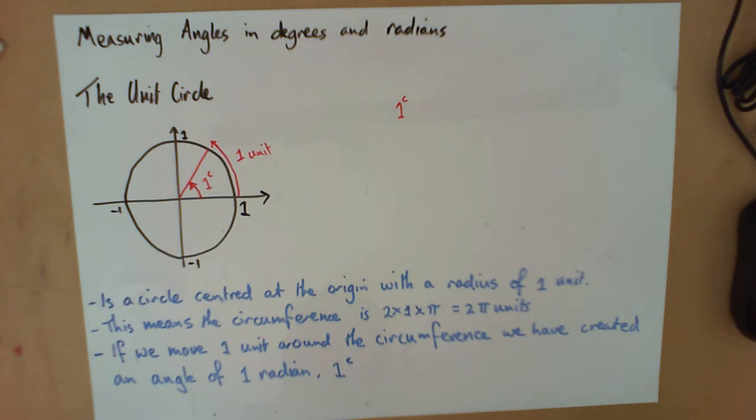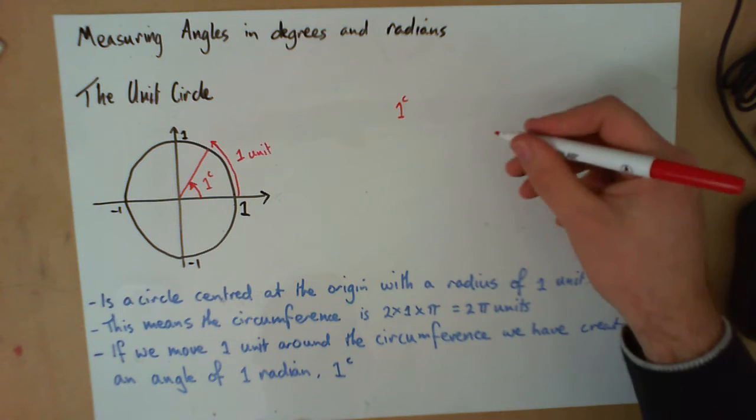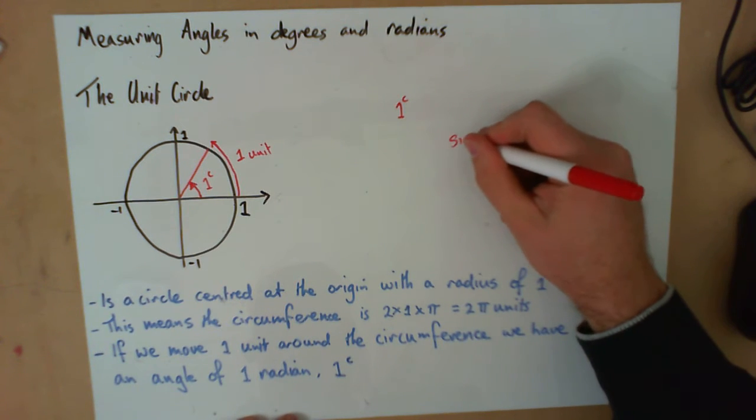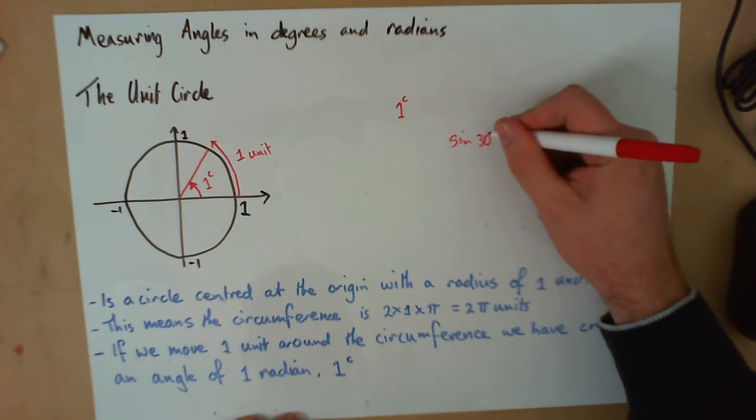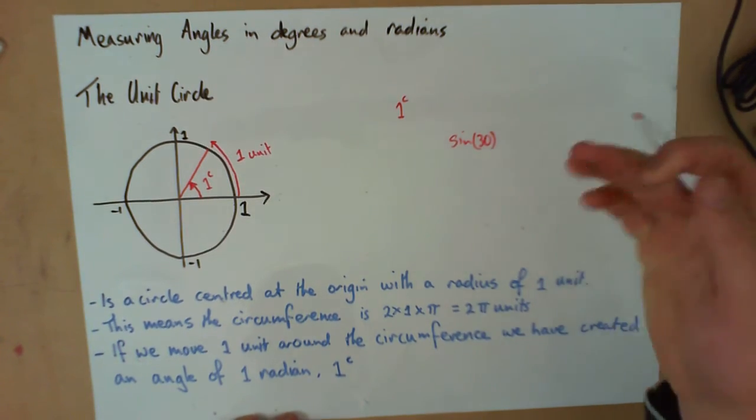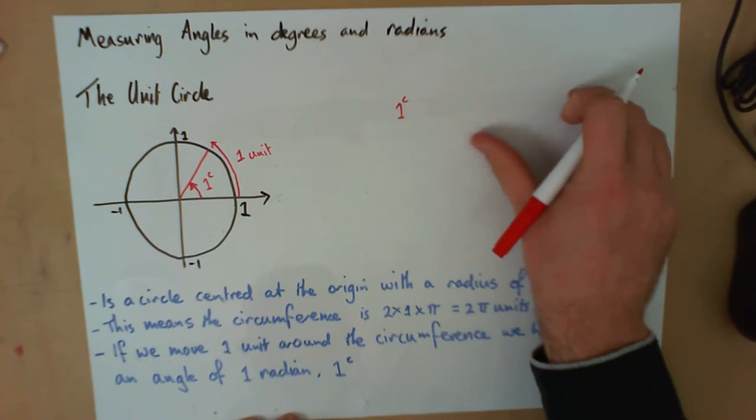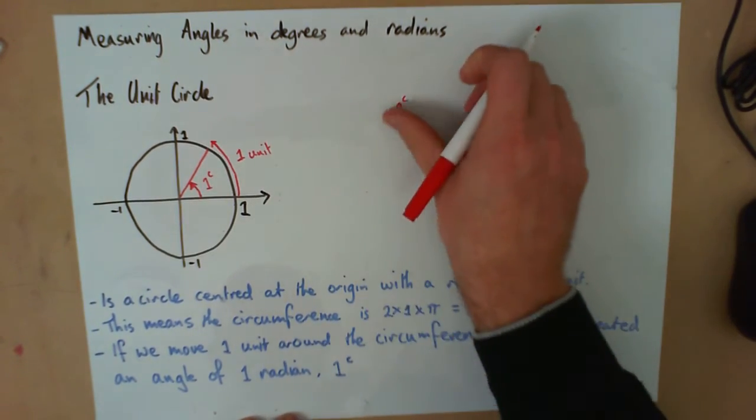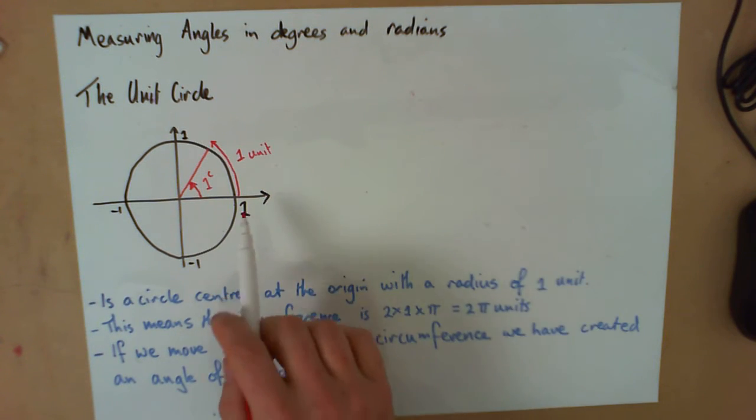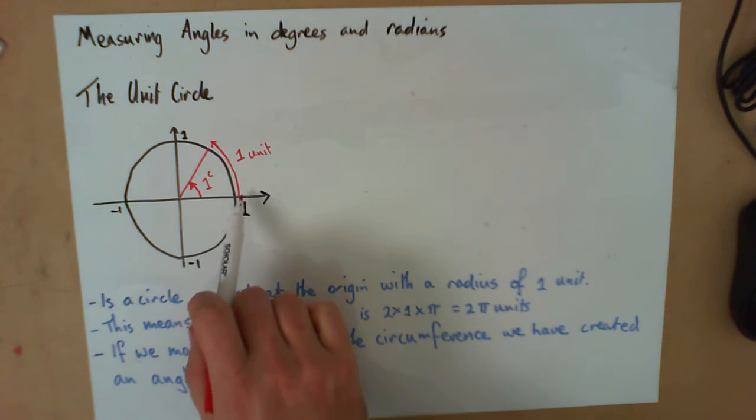You'll see that we often don't actually write the little c that often, just like we don't write the degree sign that often. Like if I'm taking sine of 30 degrees, often we'll just say sine of 30 and not 30 degrees. We'll do a similar thing with our radians.